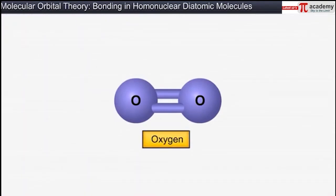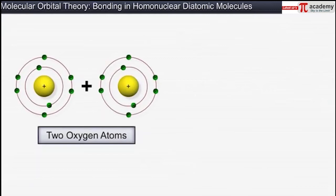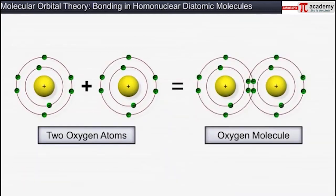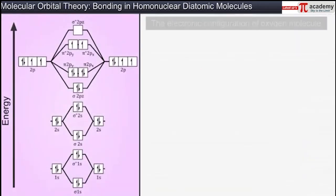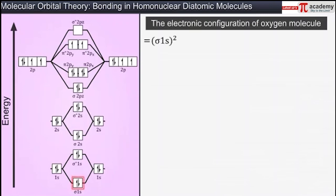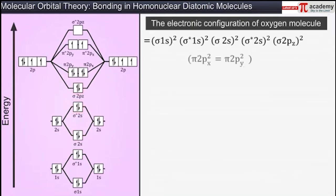Now let's look at the bonding in an oxygen molecule. Two oxygen atoms combine to form an oxygen molecule. The electronic configuration of an atom of oxygen is 1s² 2s² 2p⁴, and hence there are 16 electrons in a molecule of oxygen. The electronic configuration of the oxygen molecule is sigma 1s² sigma star 1s² sigma 2s² sigma star 2s² sigma 2pz² pi 2px² pi 2py² pi star 2px¹ pi star 2py¹.